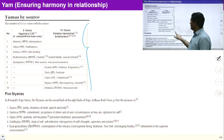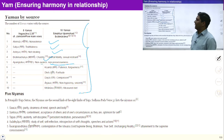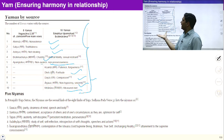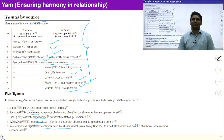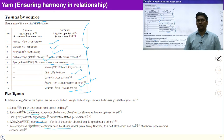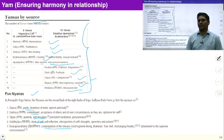So far we have studied these 10 principles under yam: non-violence, truthfulness, non-stealing, chastity, non-possessiveness, forgiveness, fortitude, compassion, sincerity, and measured diet. Now we will try to understand the five niyams. Niyam is mainly associated with self-improvement and self-purification. To be organized at the level of mind and body, five more principles have been identified: purity, contentment, self-discipline, study of self, and contemplation of the Ishwar.